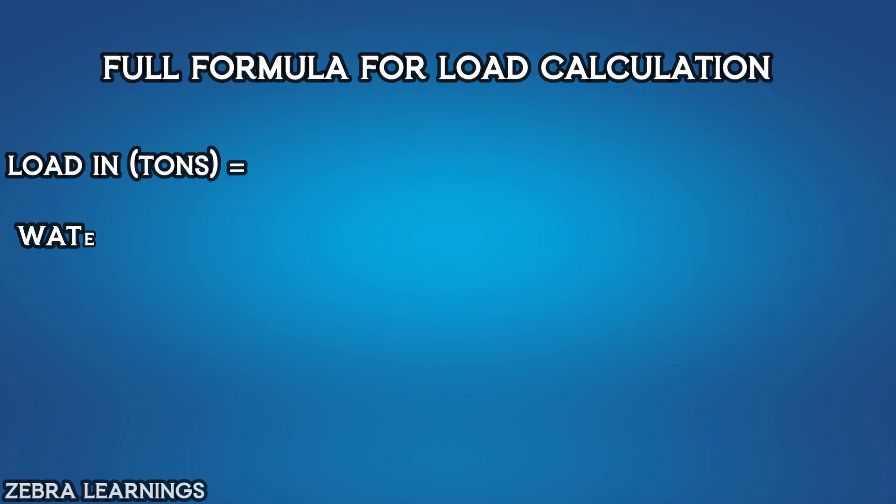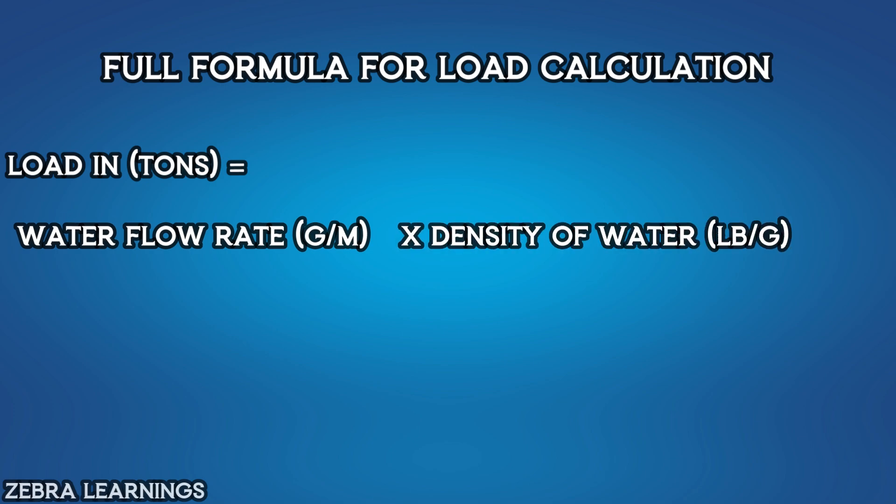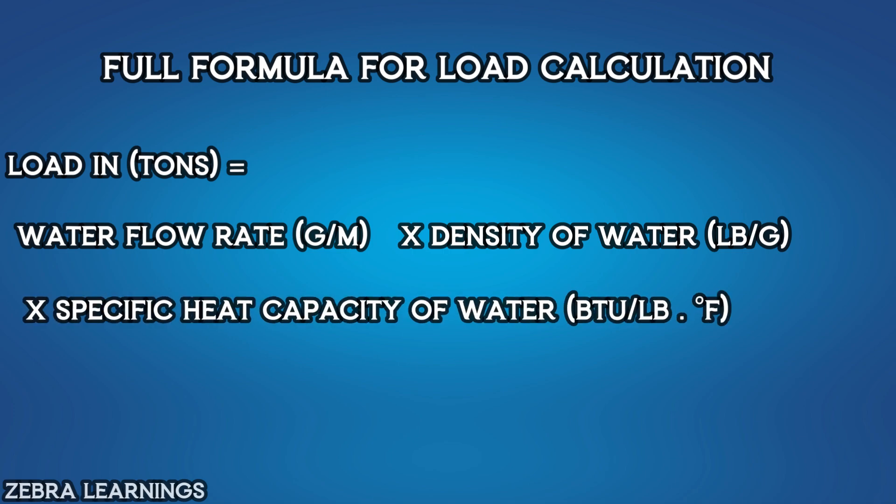Full formula for calculating load. Load in tons is equal to water flow rate in gallons per minute, multiplied by the density of water in pounds per gallon, multiplied by water's specific heat capacity in BTU per pound degree Fahrenheit, multiplied by delta T in degree Fahrenheit. This is the full formula for calculating load.